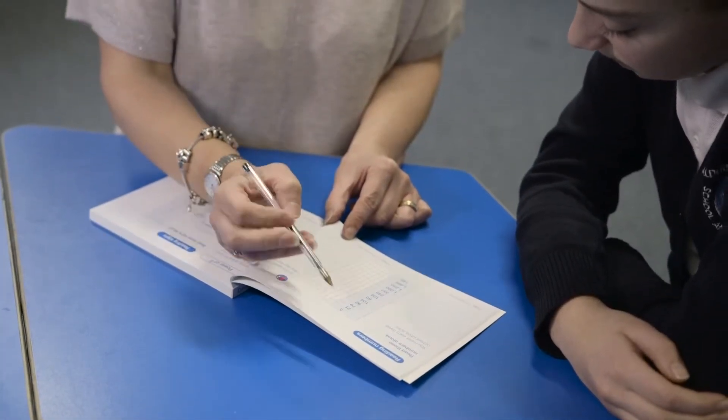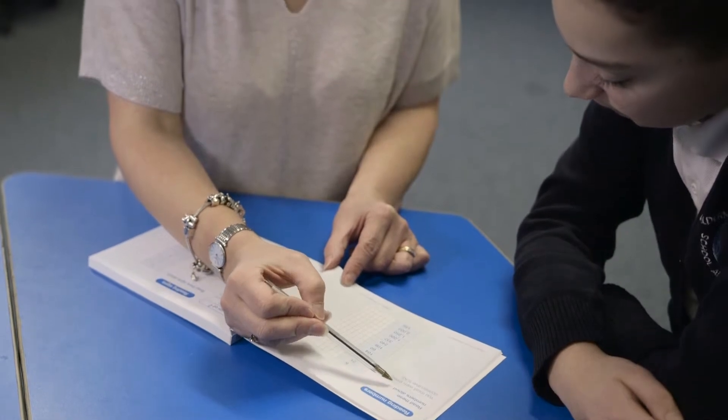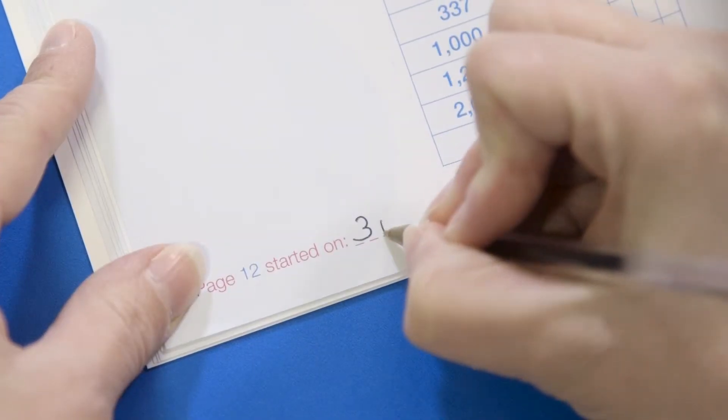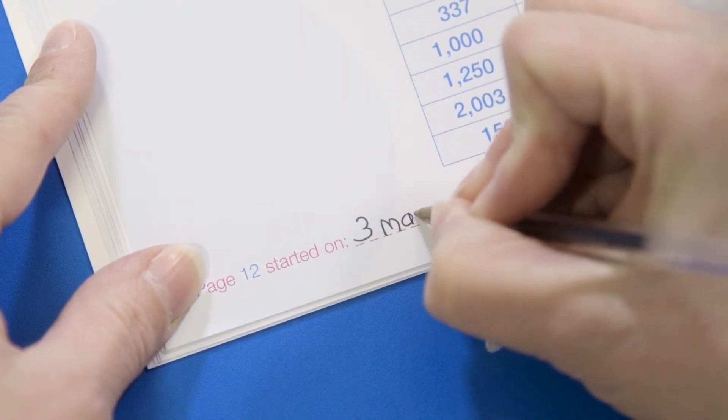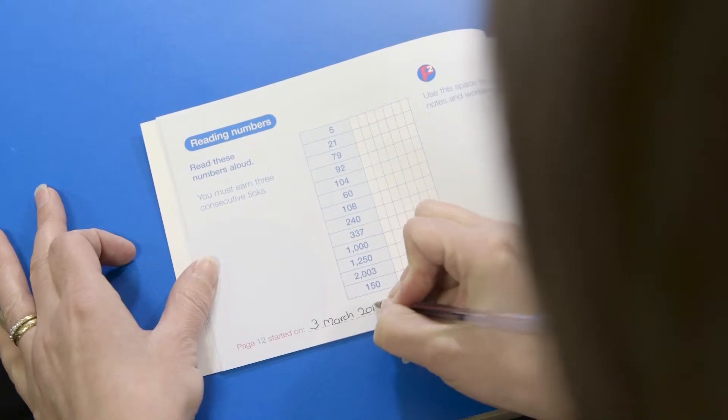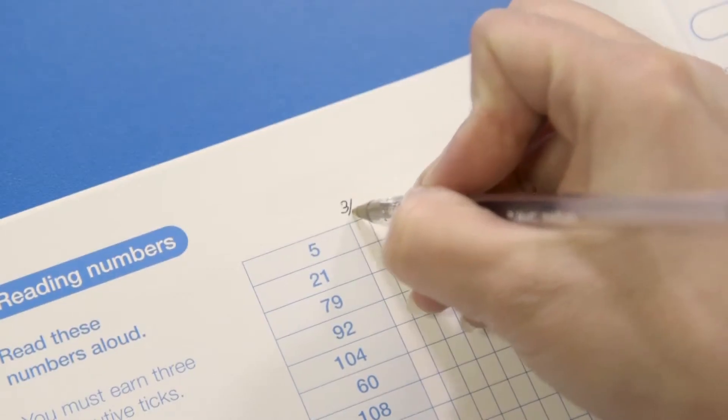Each page has a script which can be read by yourself or the student. This should be read out loud. Date each page when you start, and you can also put the date at the top of each column.